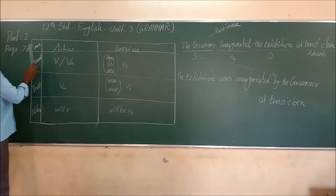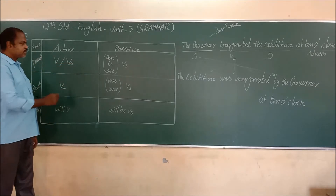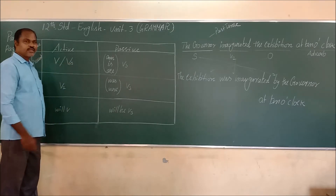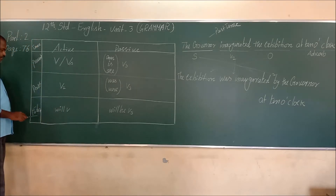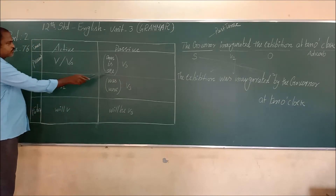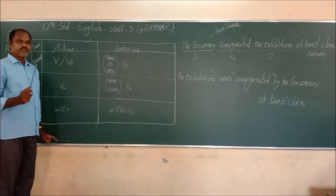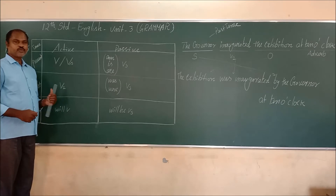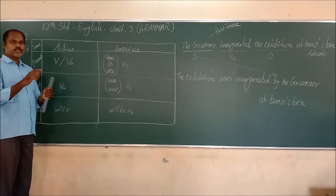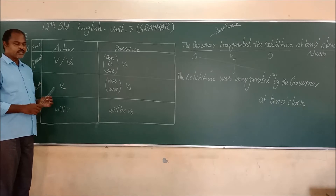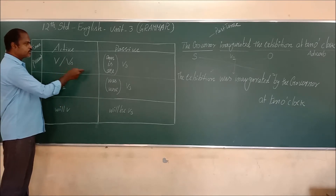This is Part 2 of active to passive. Here I have given the structure of simple questions, past tense and future tense. The active to passive condition — already mentioned in the first part — we have to shuffle the subject into the object place and the object into the subject place. This is the verb condition of active to passive.